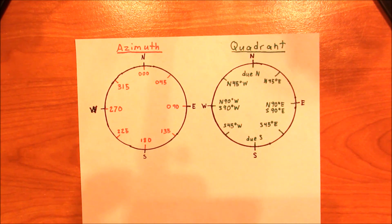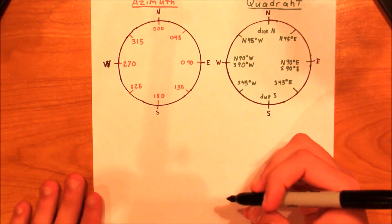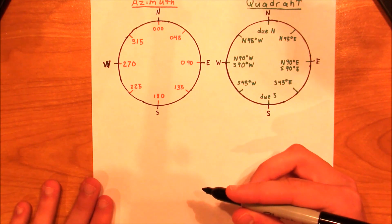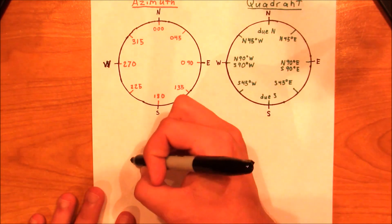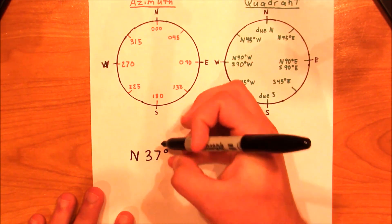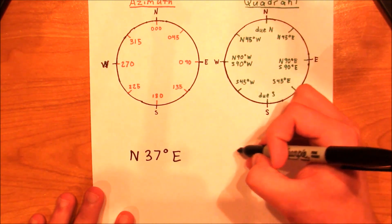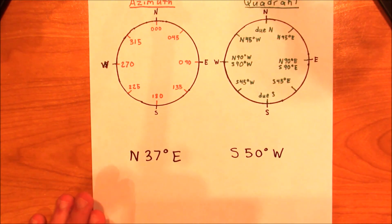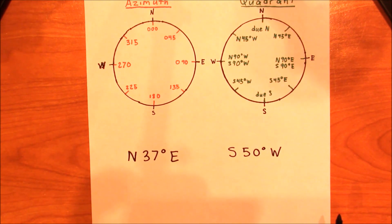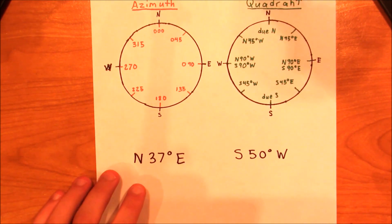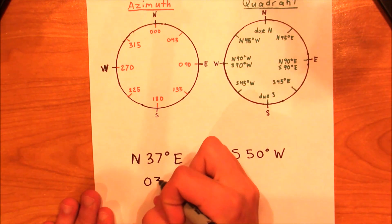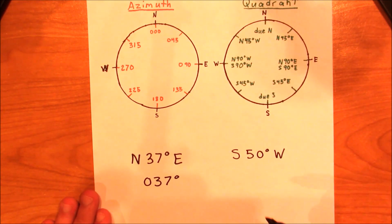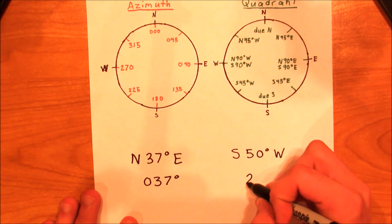So before we go any further, let's do a couple of practice problems. I'm going to give you some quadrant directions and ask you to convert them to the azimuth method. We've got 'north 37 degrees east' and 'south 50 degrees west.' Go ahead and pause the video if you need to. North 37 degrees east simply translates to 037 degrees, and south 50 degrees west translates to 230 degrees.